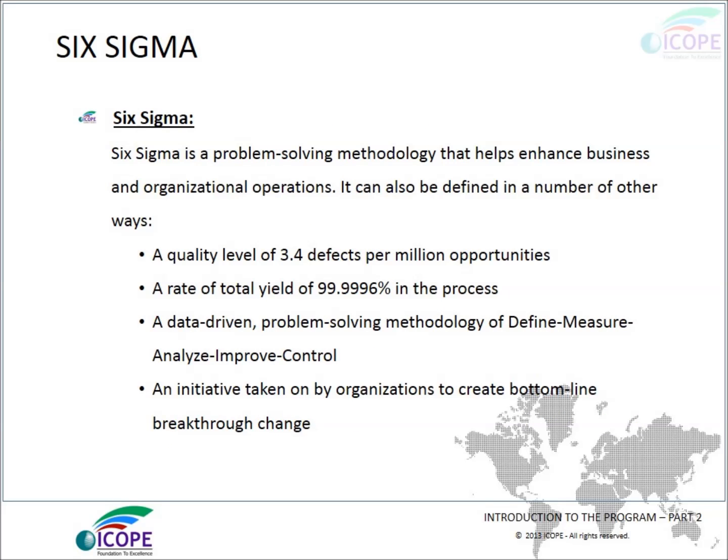Standard deviation: a numerical value used to indicate how widely individual data points vary, or the square root of the variance. It is called sigma and is represented by the Greek letter sigma. Six Sigma is a problem-solving methodology that helps to enhance business and organizational operations.